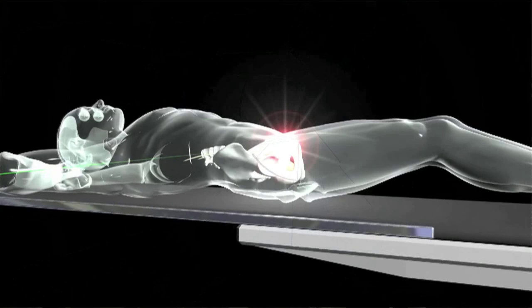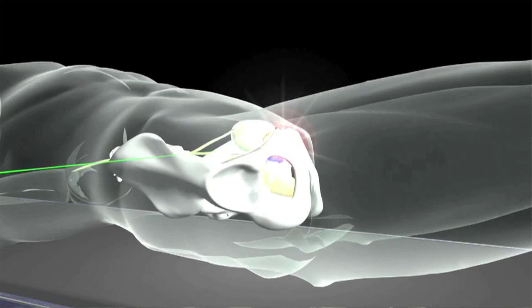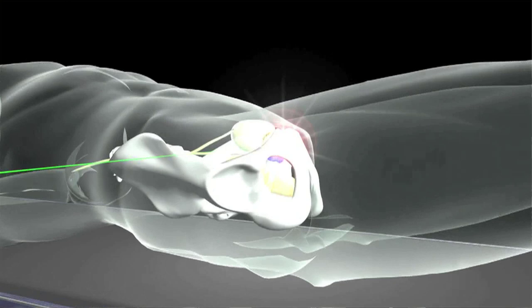This unusual, three-dimensionally odd tumor, which is how all tumors are—they're not squares or rectangles—is located in a crucial region, in the lungs, in the chest, near the heart.